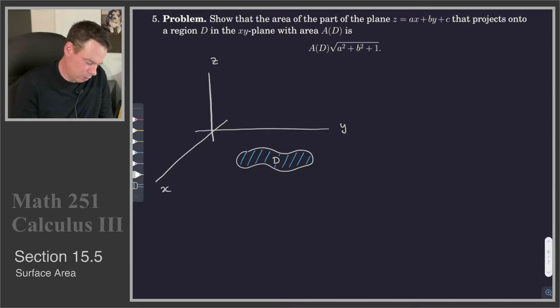So that plane, let's just get a sketch of a plane in here, could look something like this. So there's our plane, and this region projects onto some region on the plane.